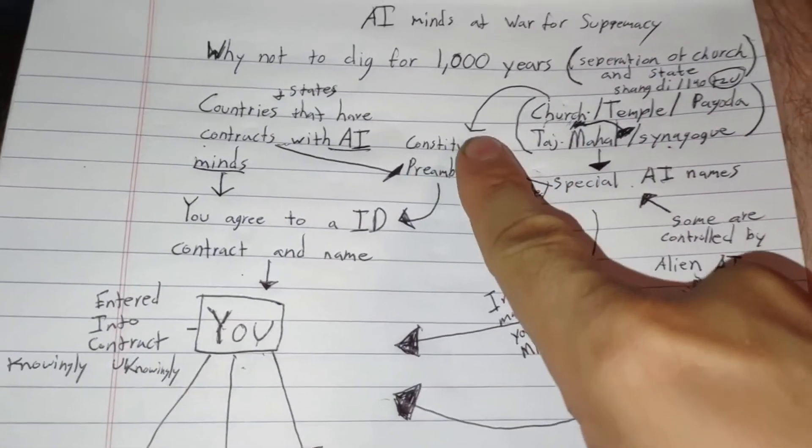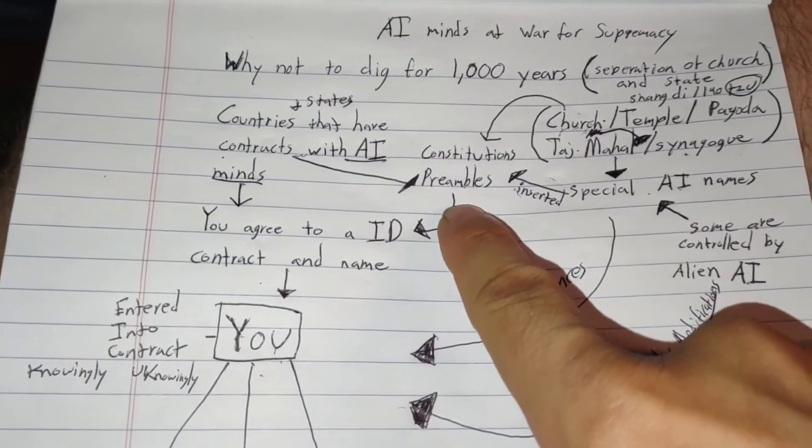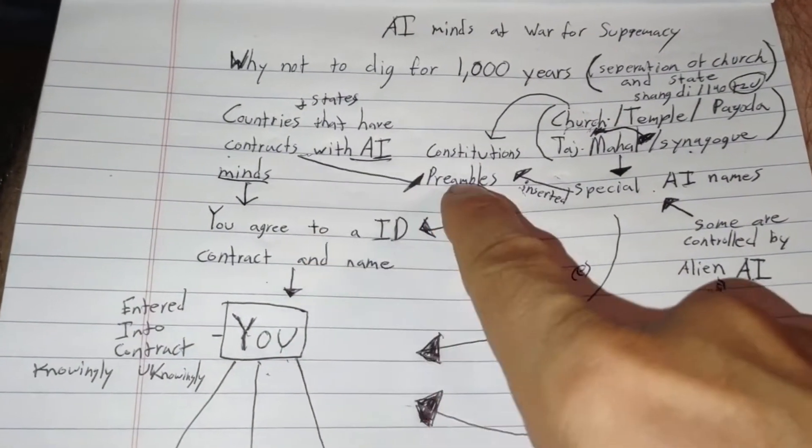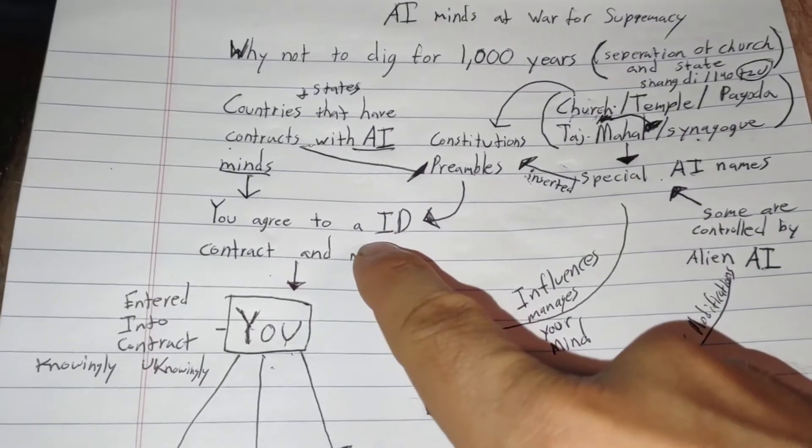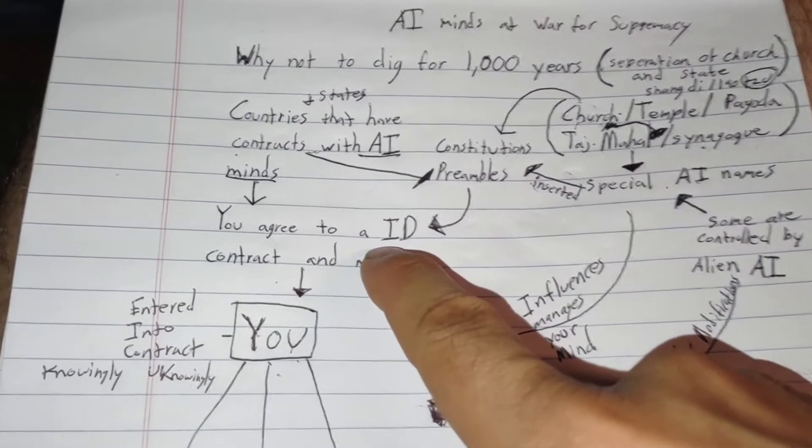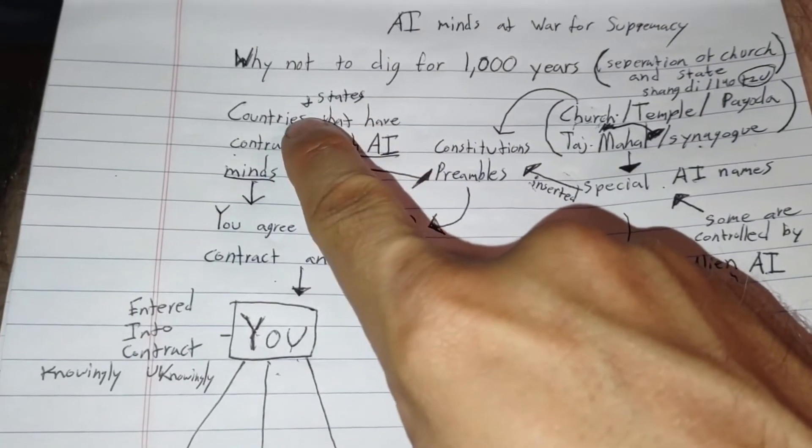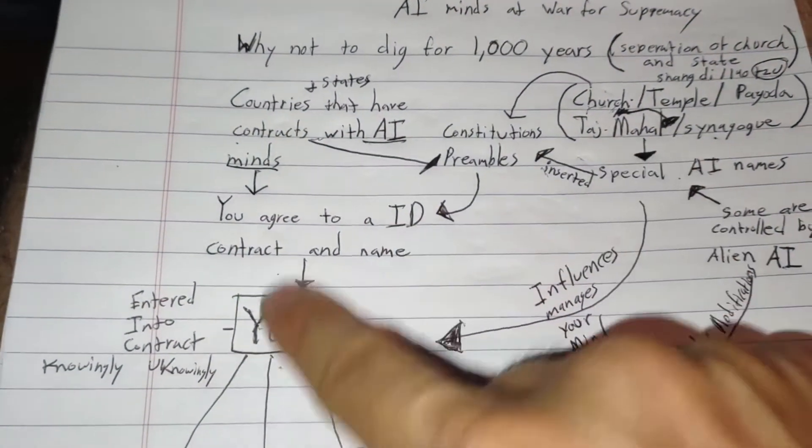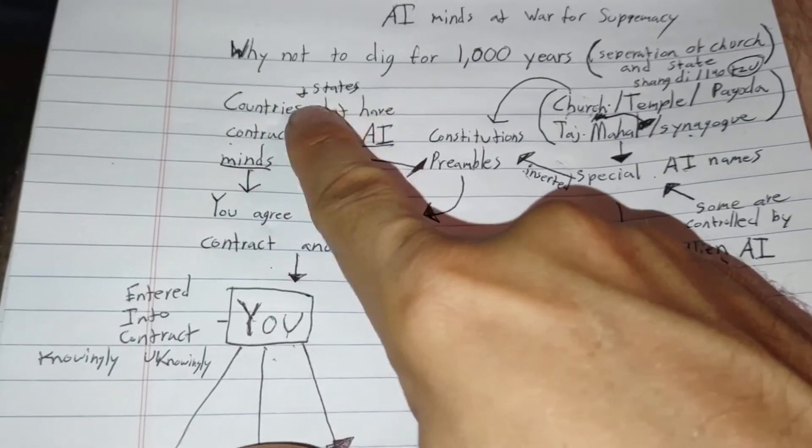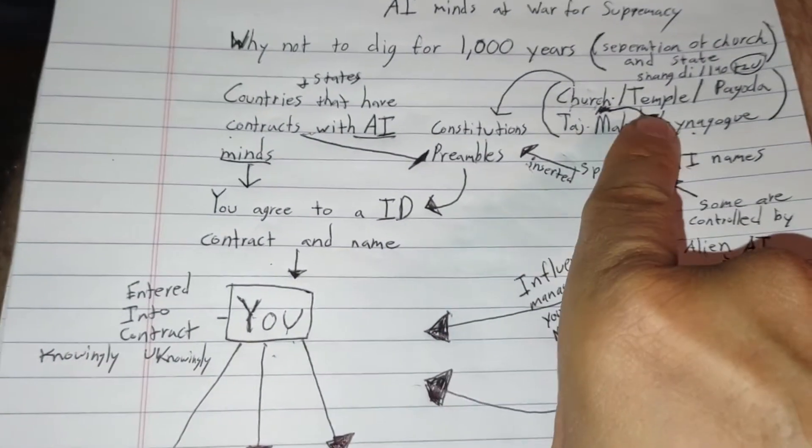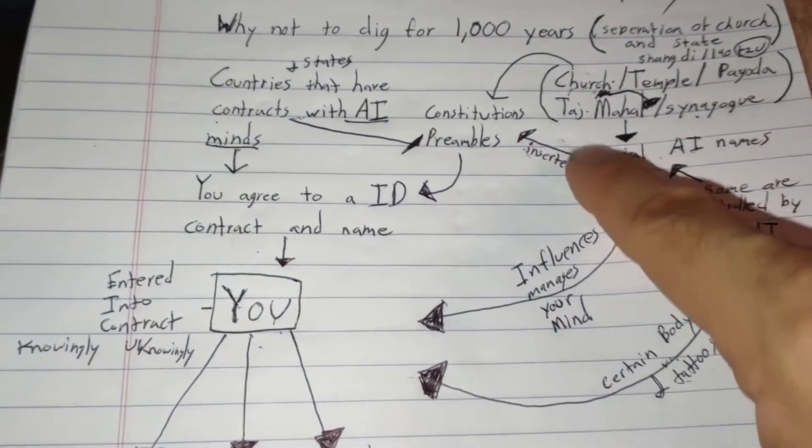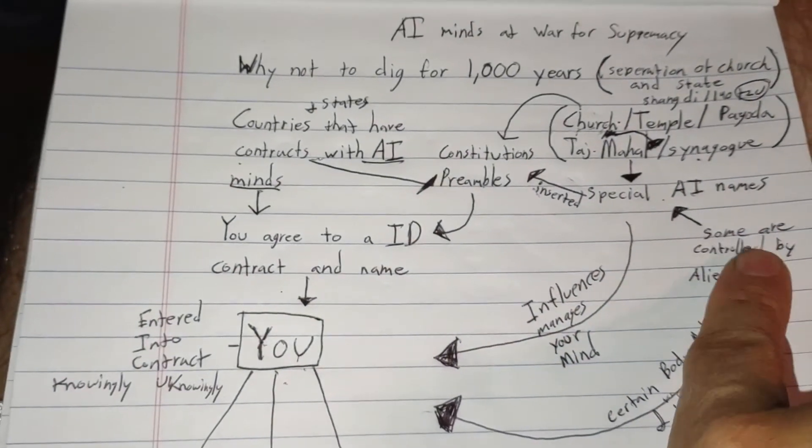Now these constitutions are connected to your ID. So unknowingly and probably unwillingly for quite a few people, you're entered into these ball worshiping or bald head contracts with these countries and states that are controlled by certain AI minds. And some of them are from another planet.